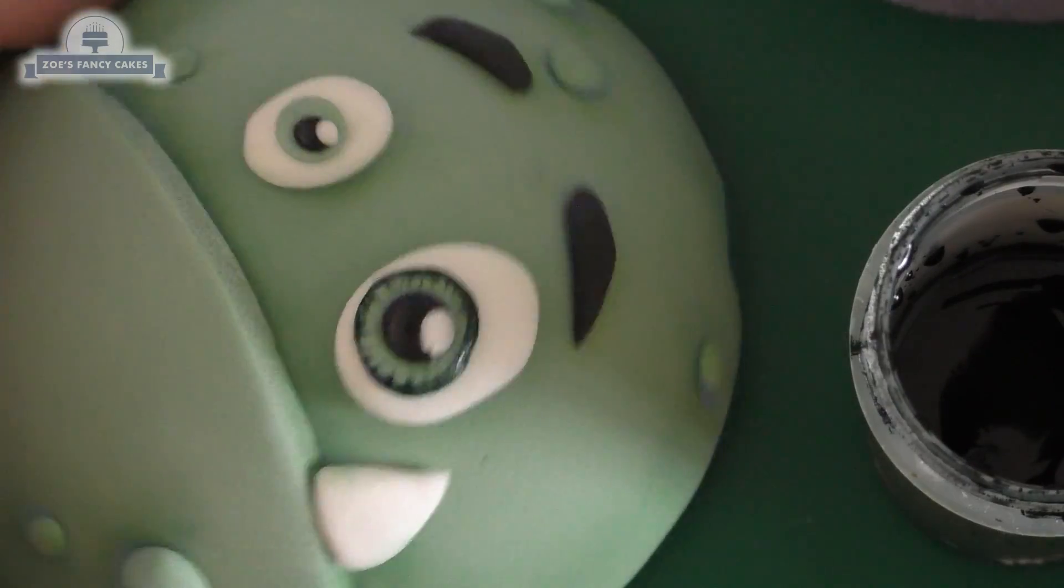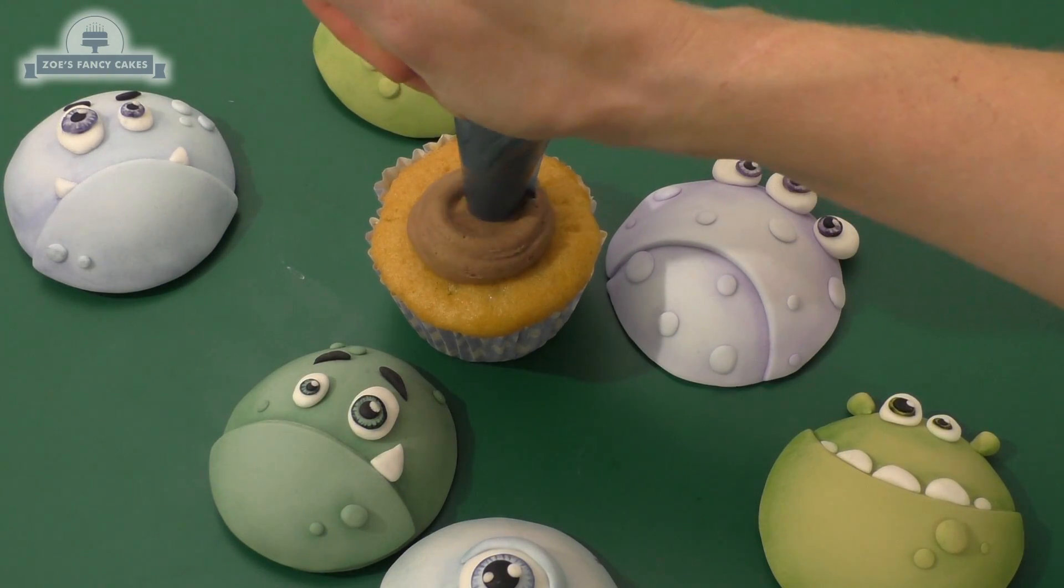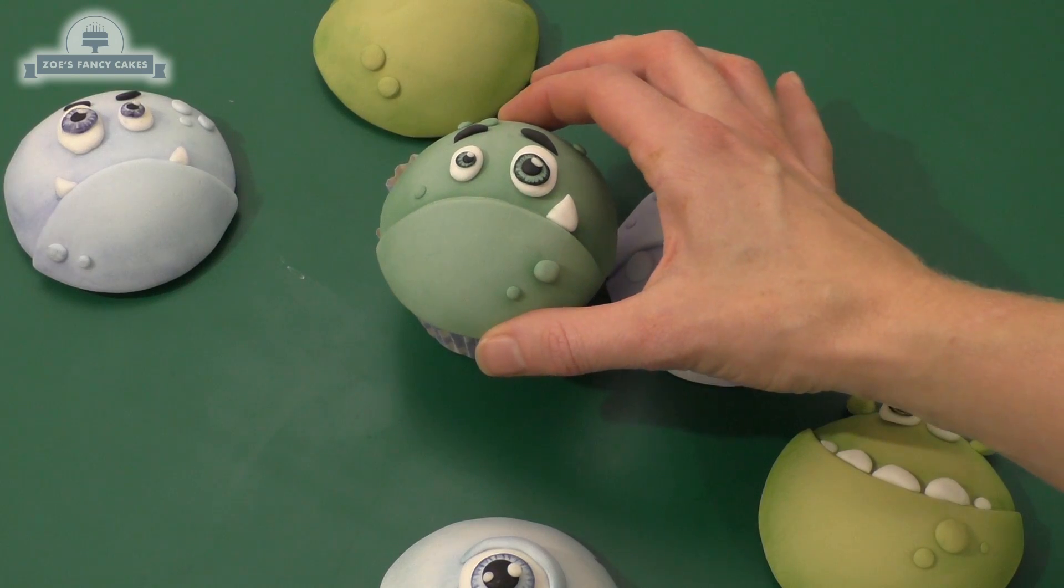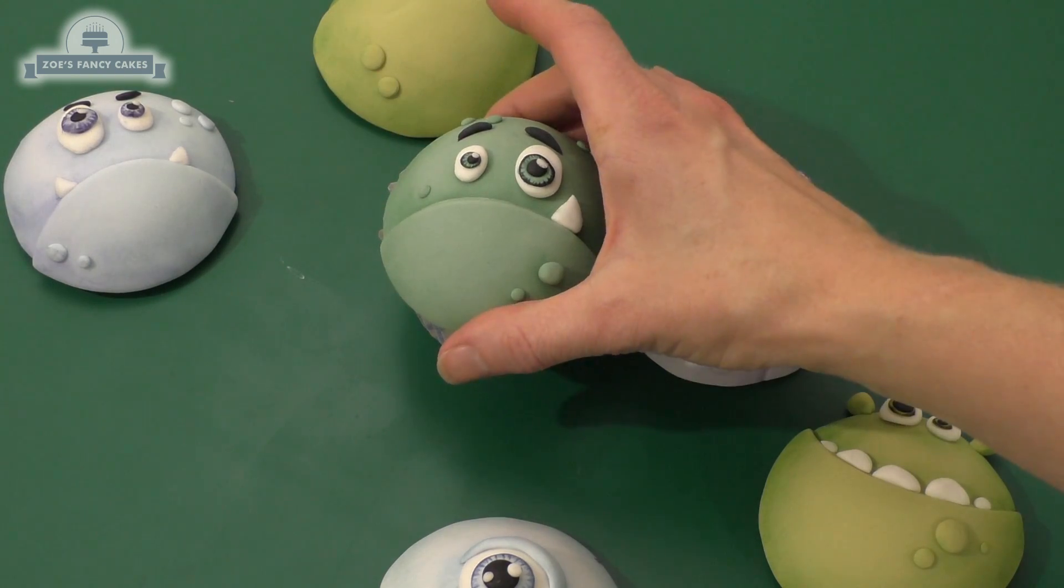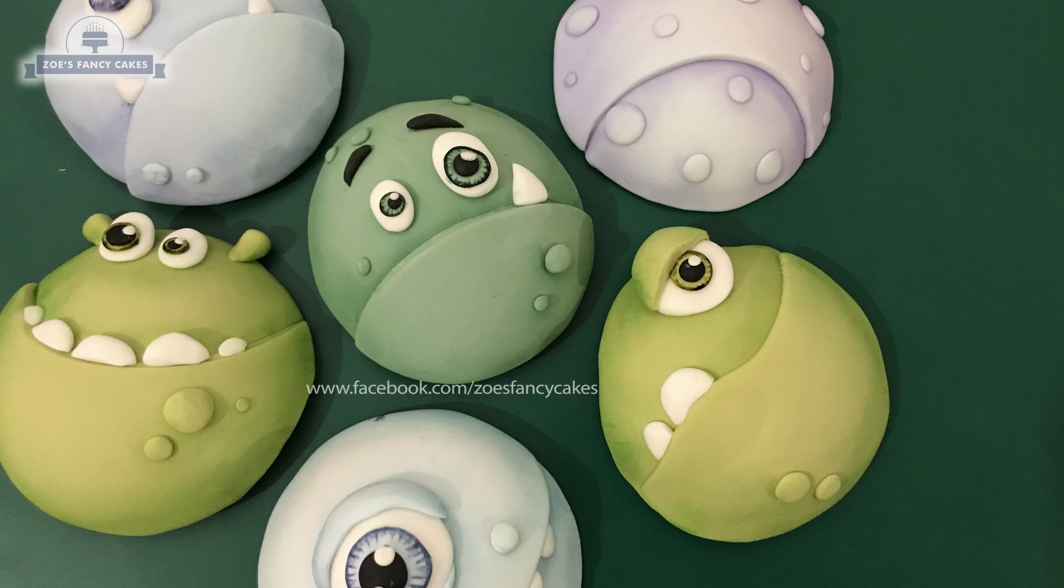Once you've done with that you just need to get them onto your cupcakes. All I'm going to do is pipe a little bit of buttercream just onto the top, and then we're going to press our little dome shaped monster on the top like that. Quick and easy idea for Halloween and children's birthday parties. Please do check out my other Halloween videos. I hope you've enjoyed the video, thank you for watching.